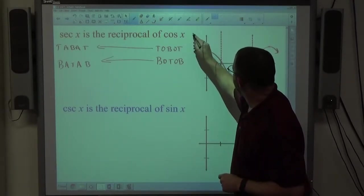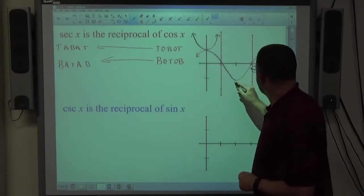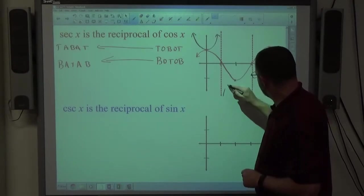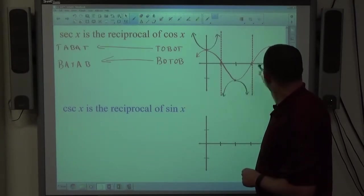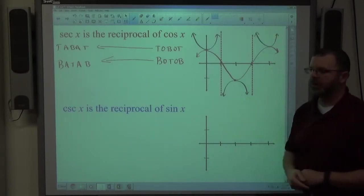This is the bottom point it hits, it's going to be like that. And this is the bottom point it hits. So it goes like that, and that's the top point it hits, so it goes like that. That's what the secant graph looks like.